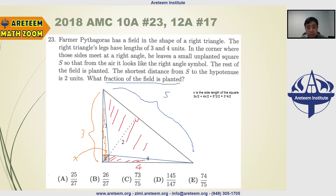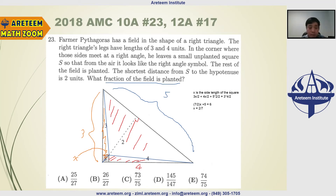Solving the equation: we get 7/2 · x plus 5 equals 6, so 7/2 · x equals 1, which gives x equals 2/7. So the side length of the small square is 2/7.